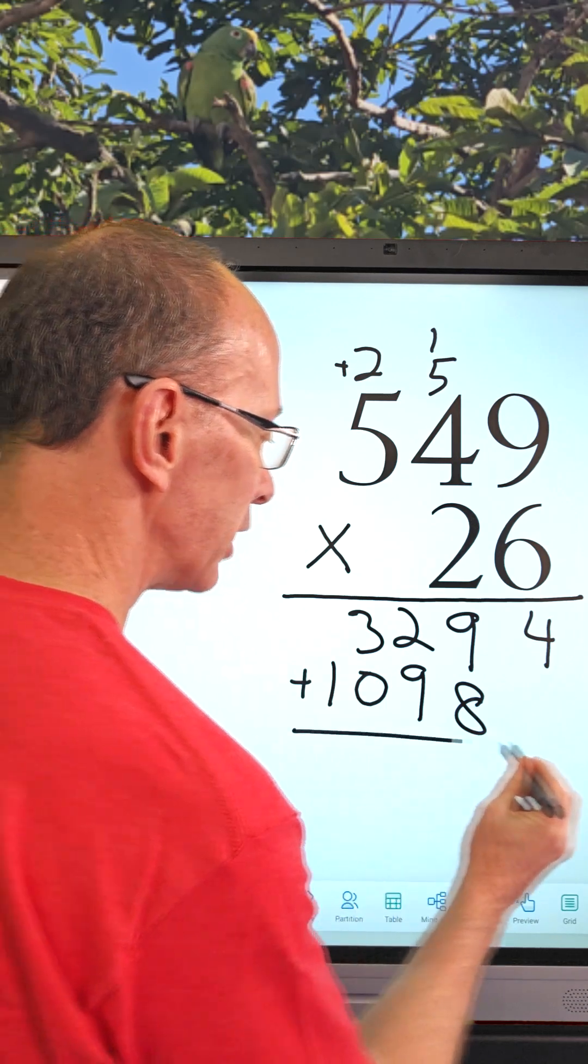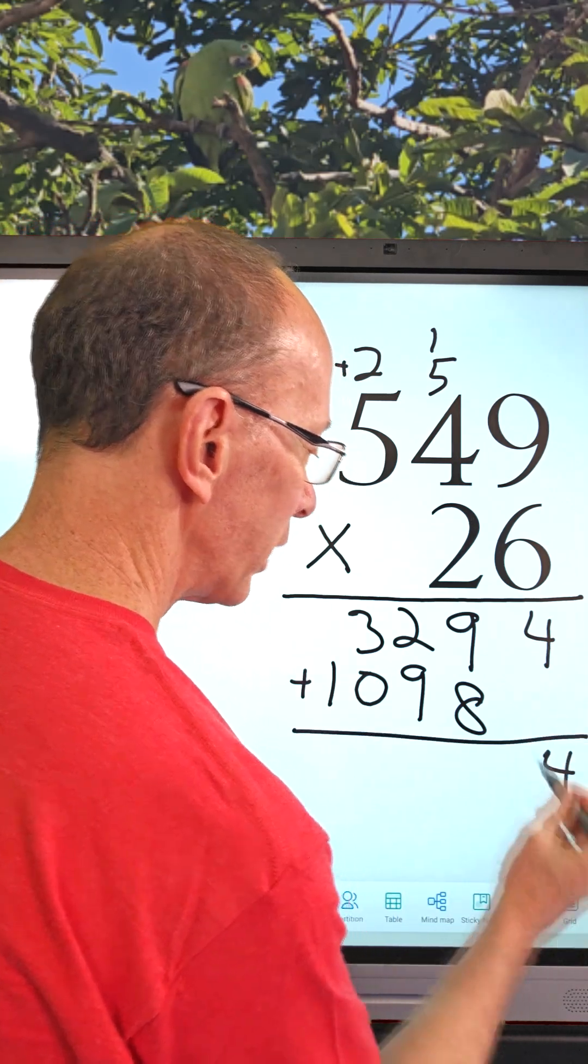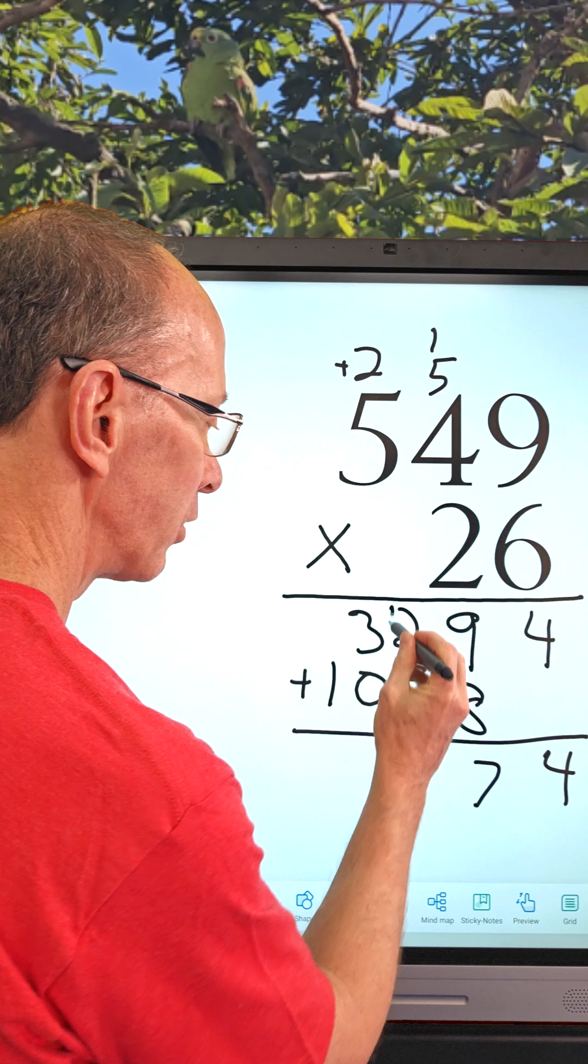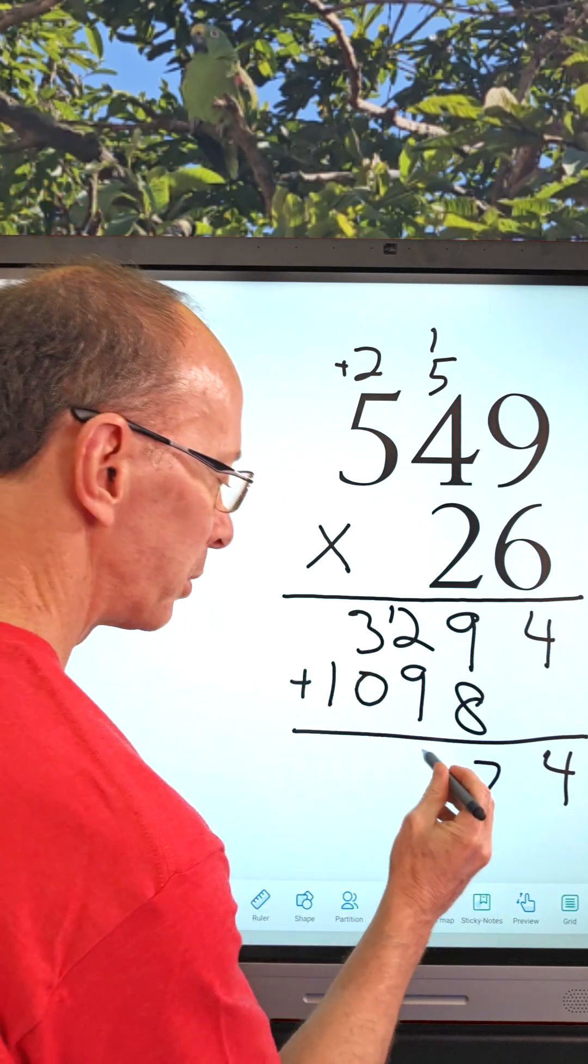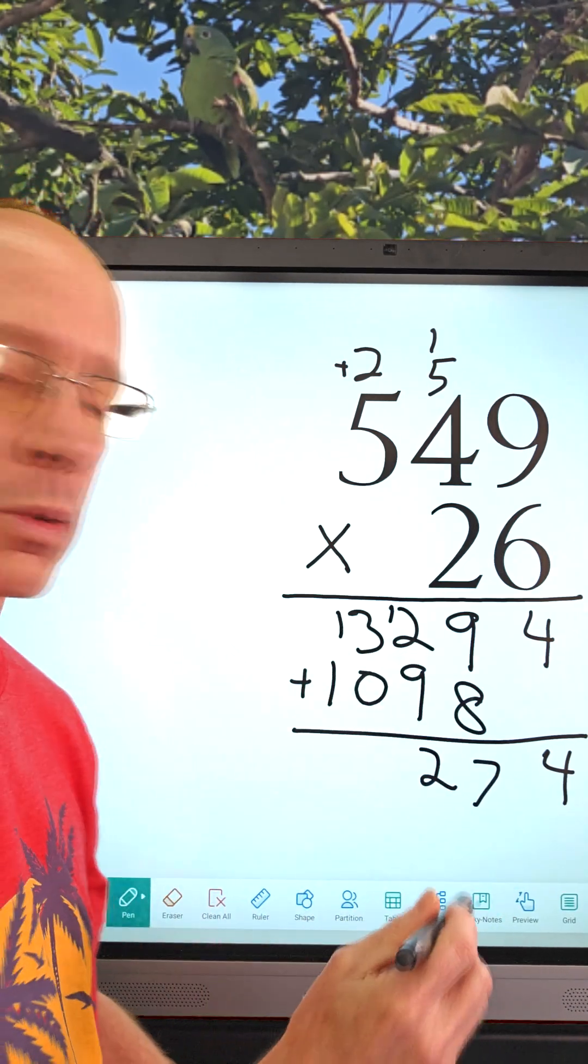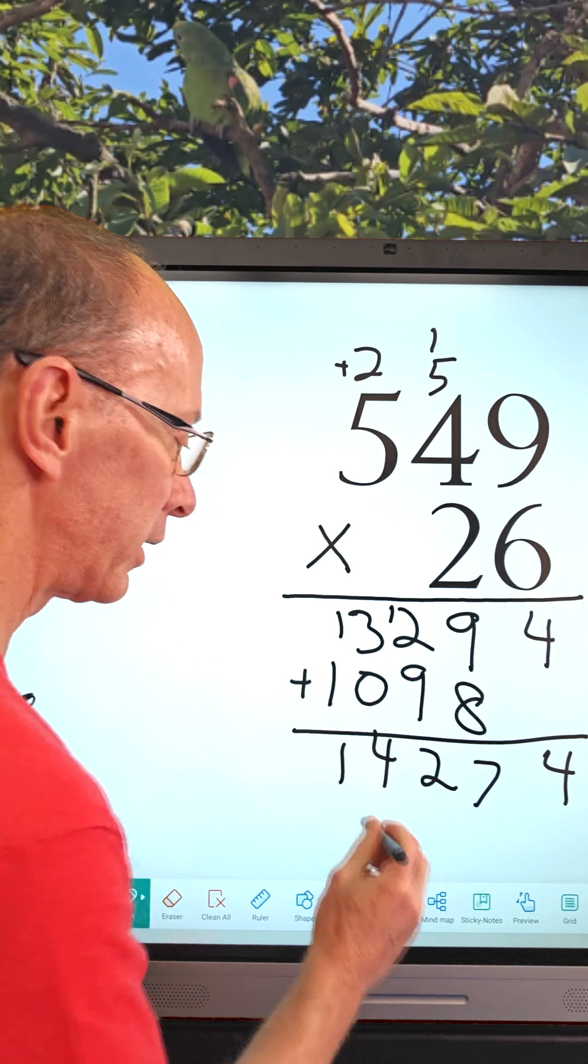Now we're going to go ahead and add these numbers. 4 and 0 is 4. 9 and 8 is 17. Carry the 1. 9, 10, 11, 12. Put the 2 right here. Carry the 1. 3 and 1 is 4 right there. Put the 1 right there. There's the answer.